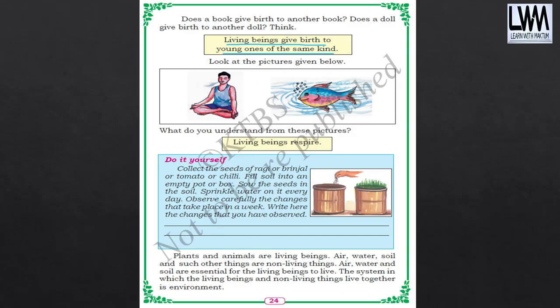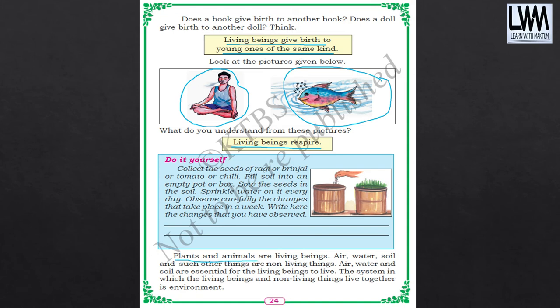Here if you see, this person is doing yoga — he is inhaling oxygen and leaving out carbon dioxide. The same way with the animals as well. That is what is called respiration. Living beings respire. Non-living things don't respire. You should be remembering: plants and animals are living beings. Air, water and soil are non-living things, and they are also essential for us to live.